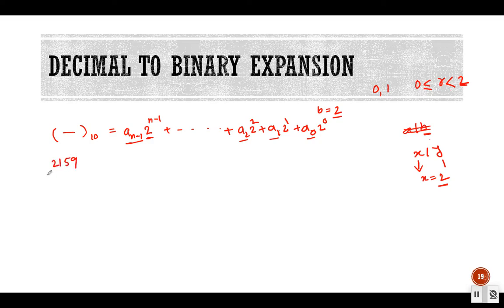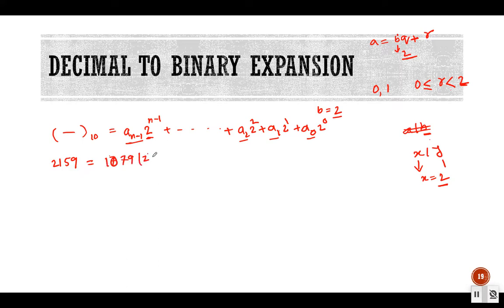Let's use the number 2159. First I divide it by 2, representing it in the form bq + r where the divisor b is 2. So 2159 = 1079 * 2 + 1. Just remember the remainder will always be 0 or 1. I'm going to keep dividing all the quotients.